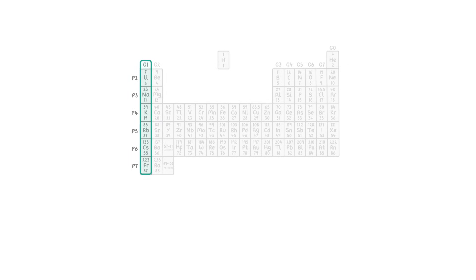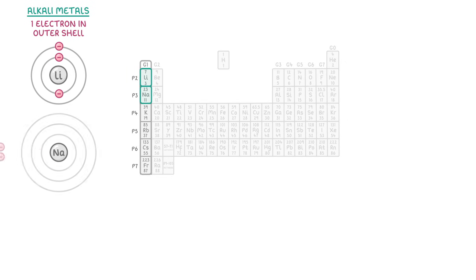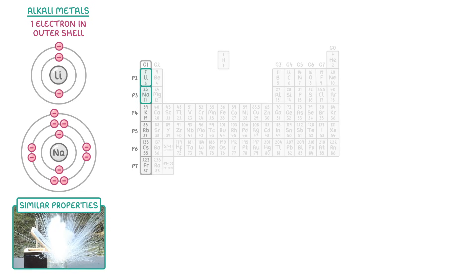So if we move over to the group 1 elements, which we call alkali metals, we can tell that they all have 1 electron in the outer shell. Whether it's lithium, which has 3 electrons overall, or sodium, which has 11 electrons overall. And it's this feature that gives all group 1 elements similar properties. For example, they all react violently with water. There are also trends within groups. For example, the group 1 elements become more reactive as you go down the group, as we'll see later in a video specifically on group 1 elements.